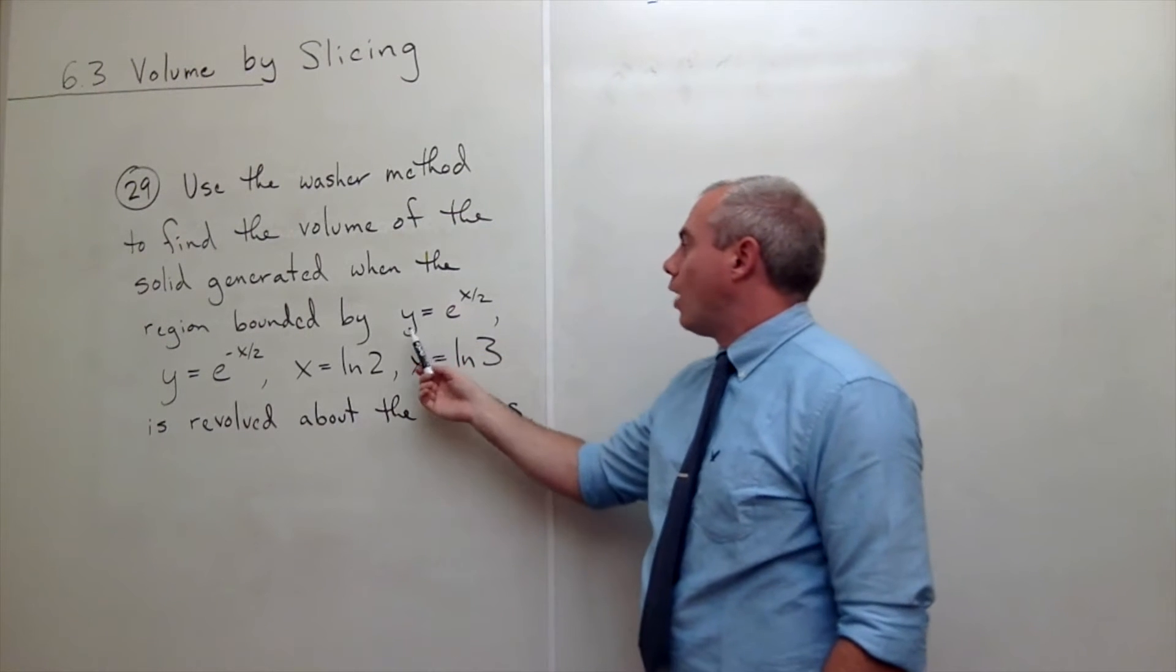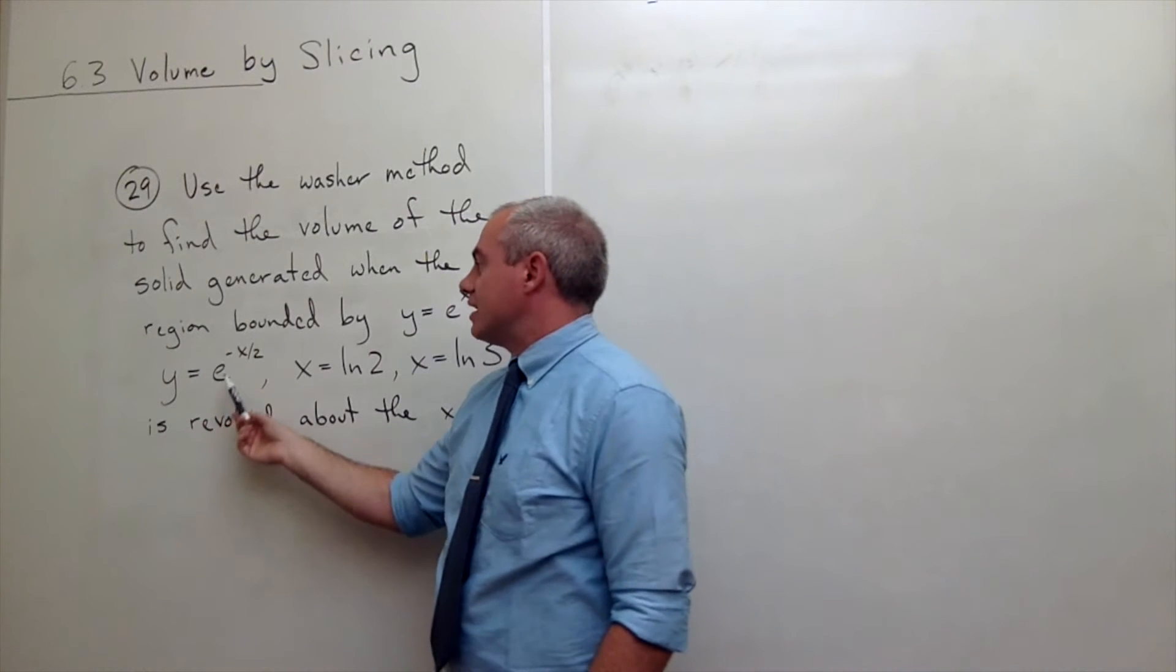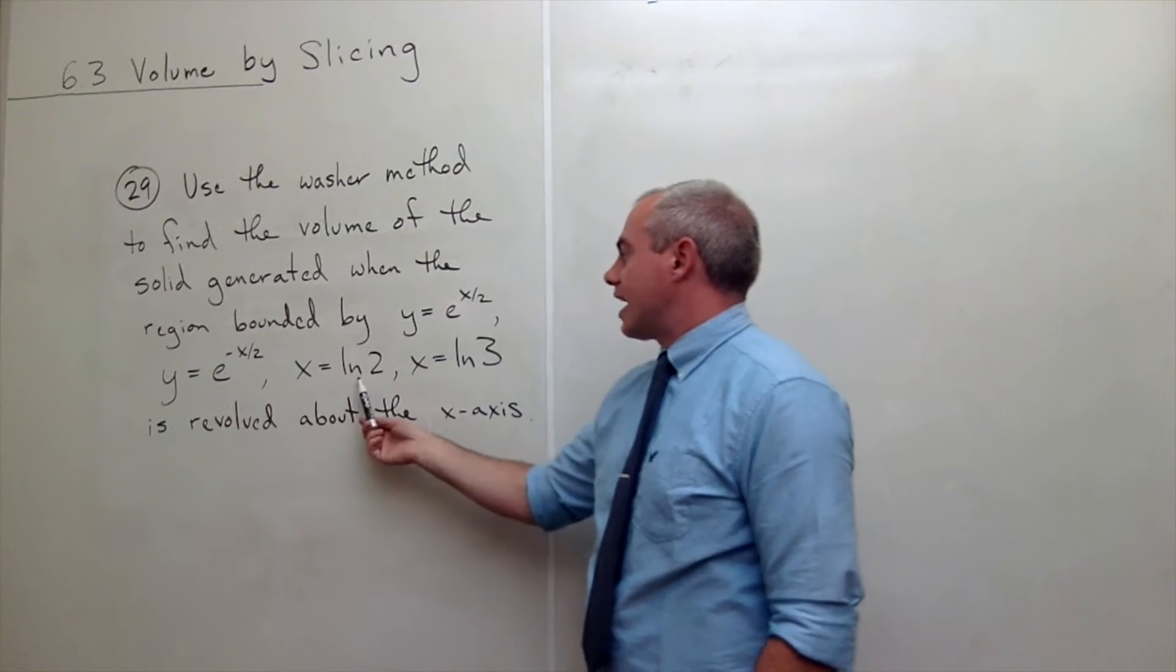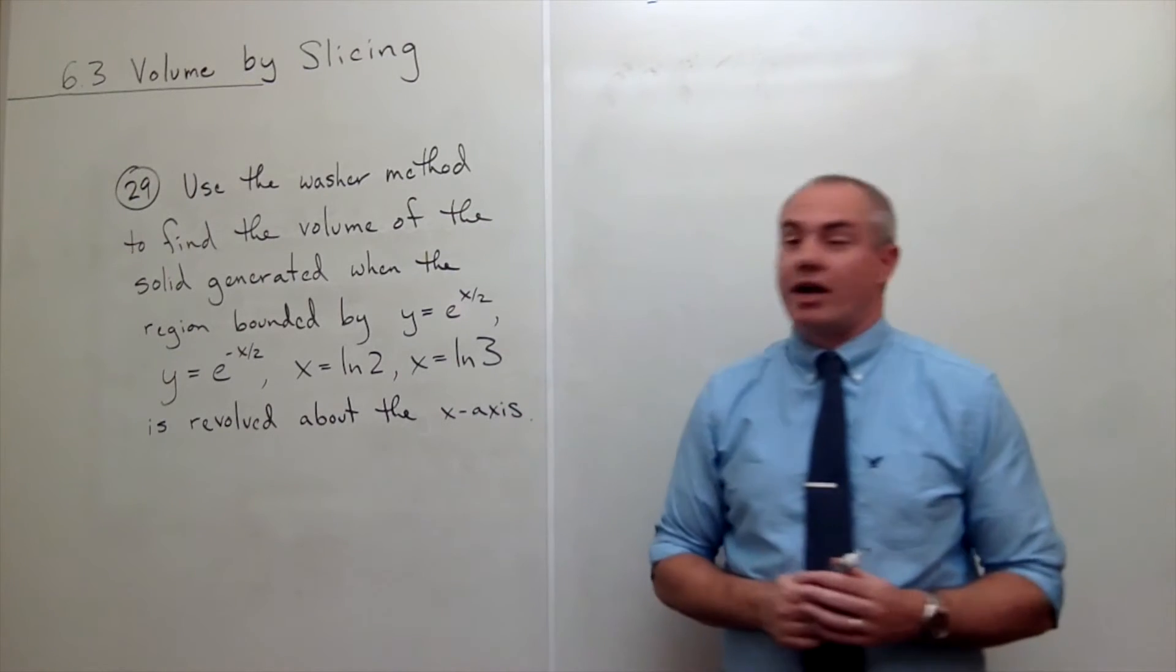the region bounded by y equals e to the x over 2, y equals e to the negative x over 2, x equals ln of 2 and x equals ln of 3 is revolved around the x axis.